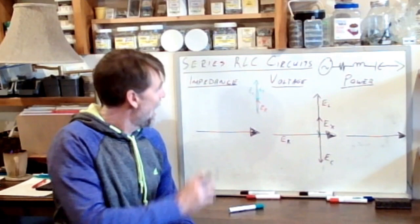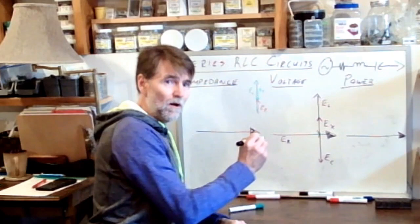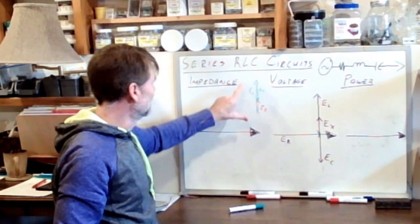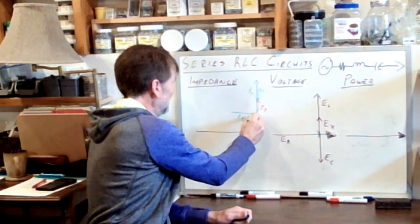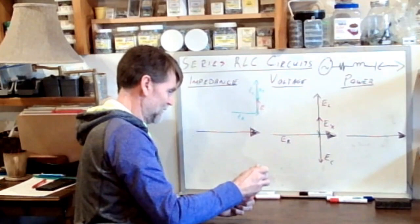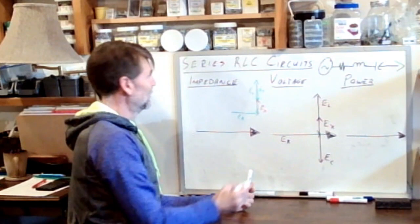And that now allows us to draw our triangle. So the resultant vector, once we add up all of these vectors, because that's what we're doing ultimately, is adding all three vectors. We started here with ER, placed EL tip to tail, placed EC tip to tail, and came back and landed here at EX.